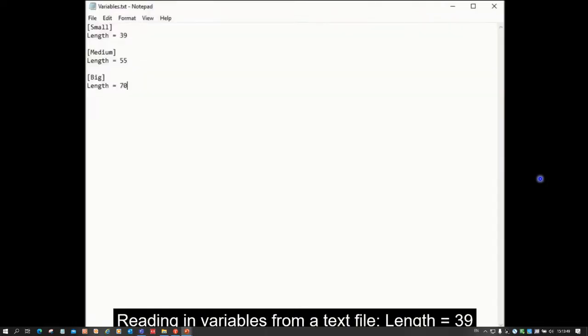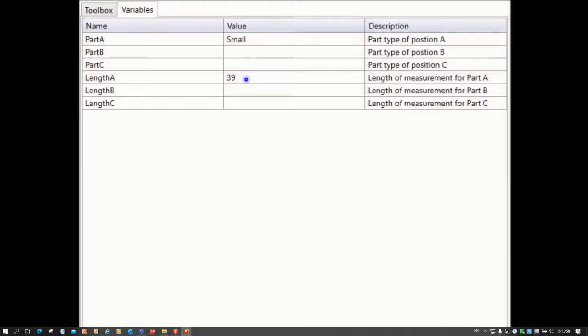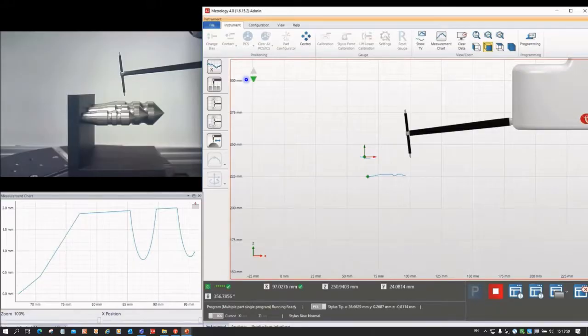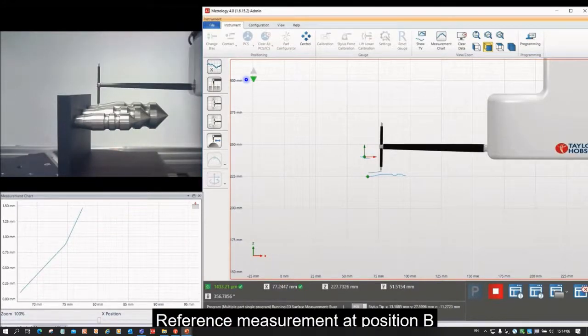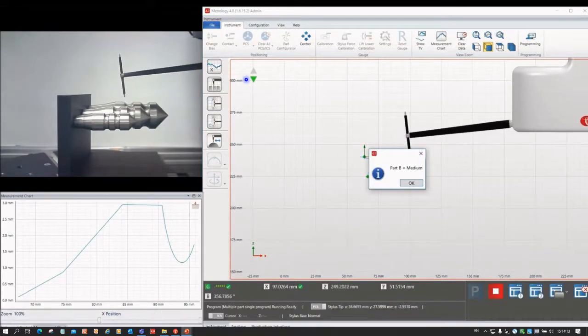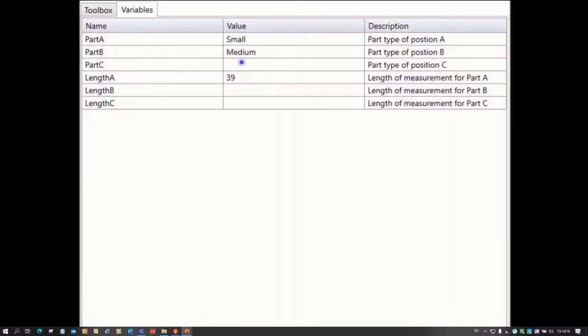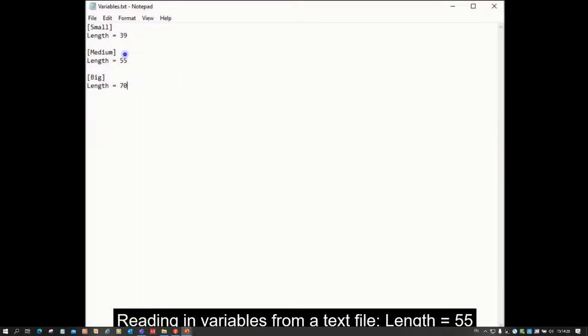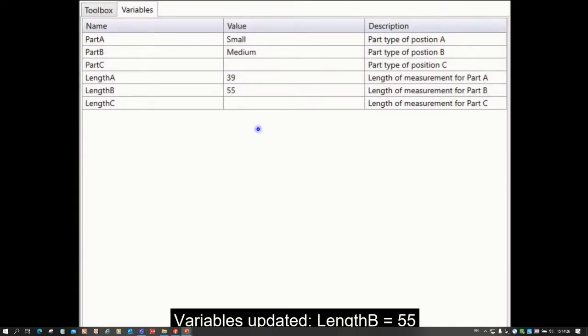And so Part A has been identified, and it reads in the length of 39 millimeters there for the small part and it fits that back into the table. This is all happening in the background, and this is just to illustrate how this is working. Now it's going to do the same thing on the middle part and say what is this part. And this time it's identified that it's a medium-sized part. And it's identified the medium-sized part, it then goes and looks up in the database or in the text file there, and it says this medium-sized part is 55 millimeters long.